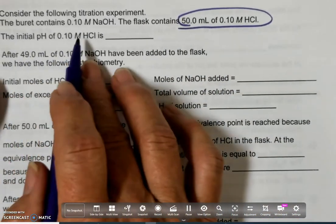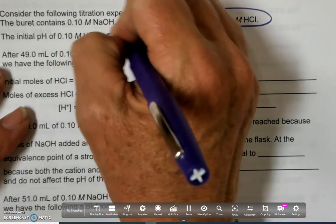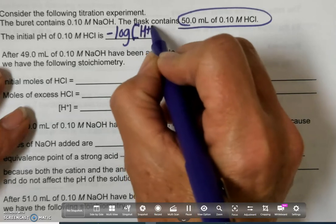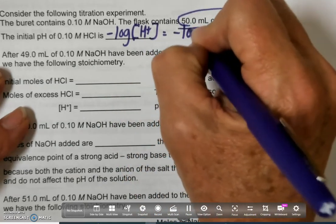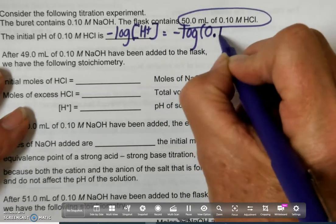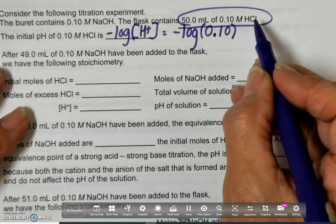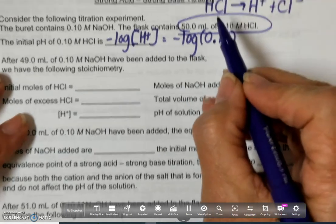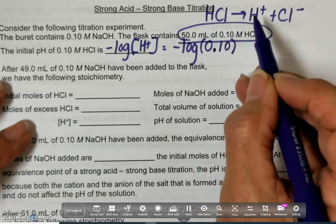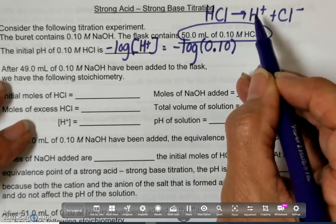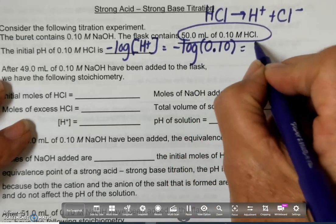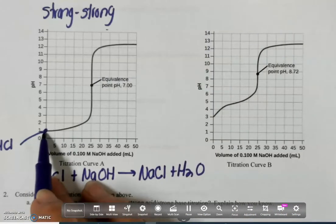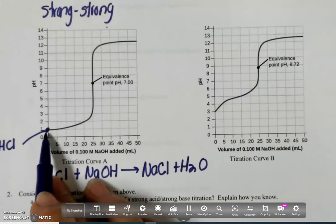So if I want to find out what my initial pH is, because this is a strong acid, I can say that my pH is going to be the negative log of the concentration of H+, which is the negative log of the concentration of my acid. Because this completely dissociates, however much of this I have, I have the same amount of that. So I take the negative log of that and I get a pH of 1. So if you look at our curve, that's where we are.